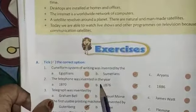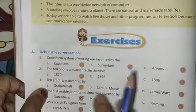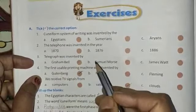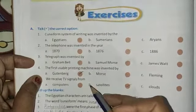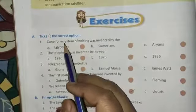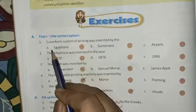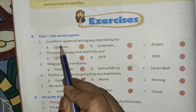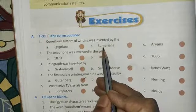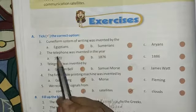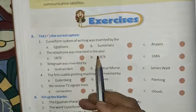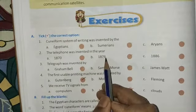Now first exercise is check the correct option. This all you have to write in your book itself, no need of writing in the notebook. Now first one, A, number 1: Uniform system of writing was invented by the Sumerians, B. Number 2, the telephone was invented in the year 1876, that is B.